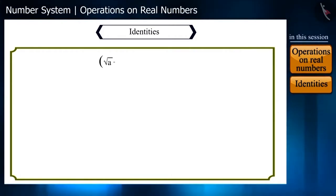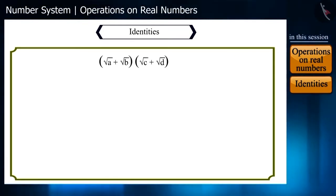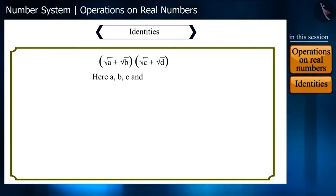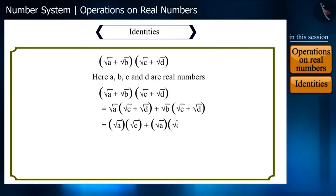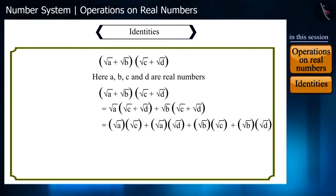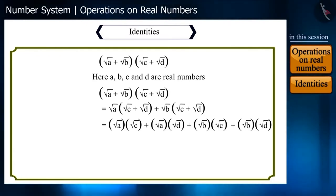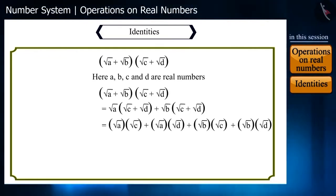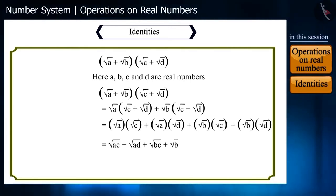Now suppose the numbers are of the form (√a + √b)(√c + √d). We simplify this using the distributive law of multiplication over addition, opening the brackets to get: √(ac) + √(ad) + √(bc) + √(bd).